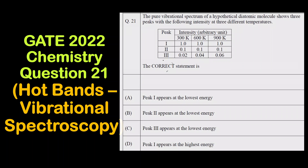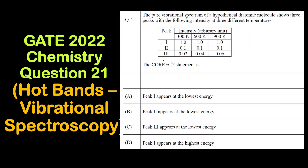Hello everyone, welcome to Chemazon Complete Chemistry. In today's video we are going to solve question 21 of the GATE 2022 chemistry paper, which is based on the concept of hot bands from vibrational spectroscopy. So let us first read the question.